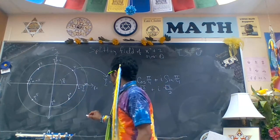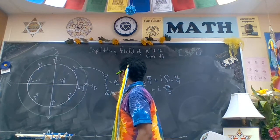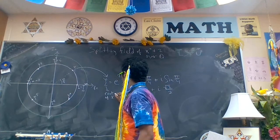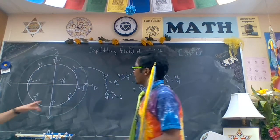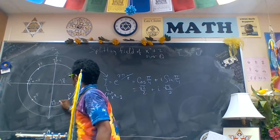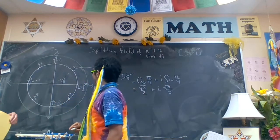So clearly zeta is a root of x to the eighth minus 1. And this is negative i. Oh, and this is negative i. Thank you, Mackenzie. I left that one out.